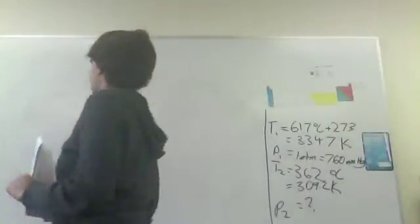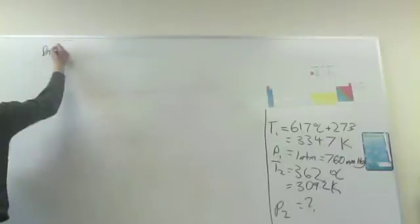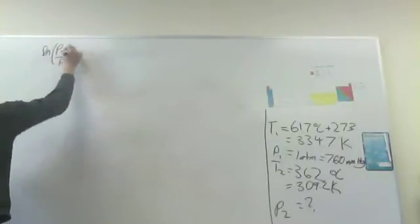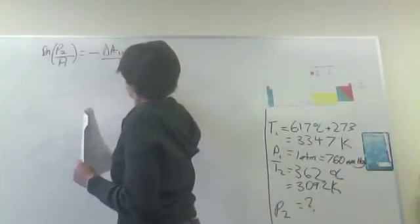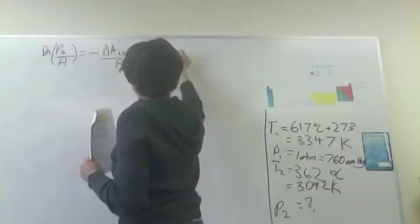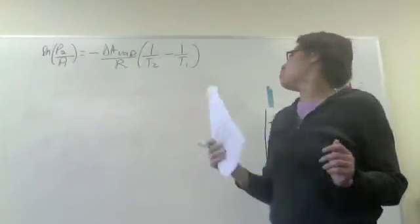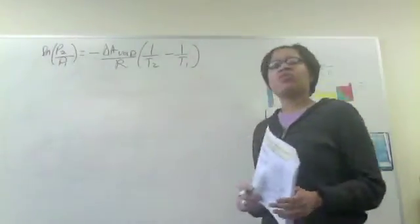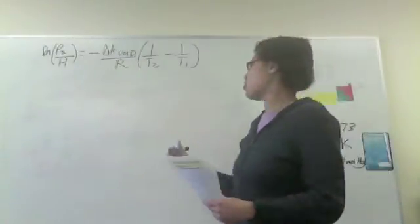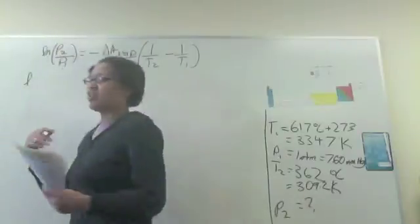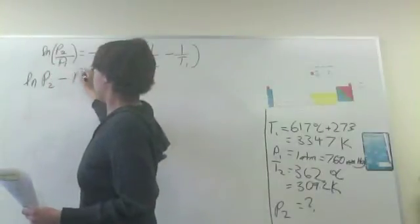Okay, so we would like to use our two-point Clausius-Clapeyron equation, which I will rewrite here. Okay, so to simplify this equation and give us P2, we're going to use a property of logarithms that you might have picked up in algebra class, and that's if you have the logarithm of a fraction, that's equal to the log of the numerator minus the log of the denominator.